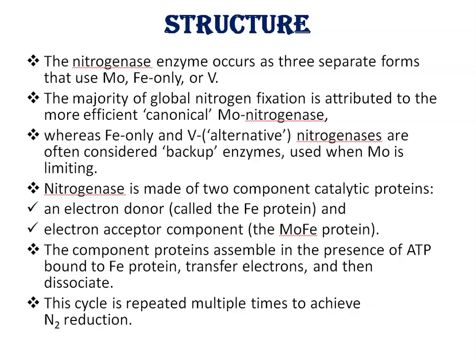Nitrogenase enzyme occurs as three separate forms that use molybdenum, iron only, and vanadium. The majority of global nitrogen fixation is mainly attributed to the more efficient form, molybdenum nitrogenase. The other two forms — iron-only and vanadium nitrogenases — are considered backup enzymes, used only when molybdenum is limiting. Nitrogenase is made up of two component catalytic proteins: an electron donor called iron protein, and an electron acceptor called molybdenum-iron protein. The component proteins assemble only in the presence of ATP bound to iron protein, transfer electrons, and then dissociate. This cycle is repeated multiple times to achieve nitrogen reduction.